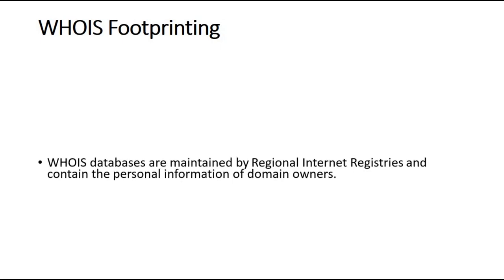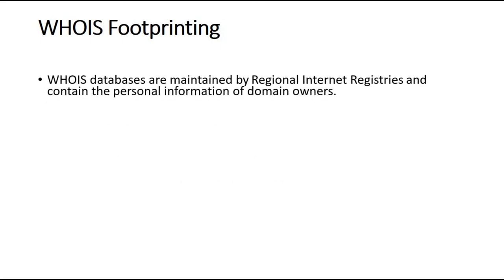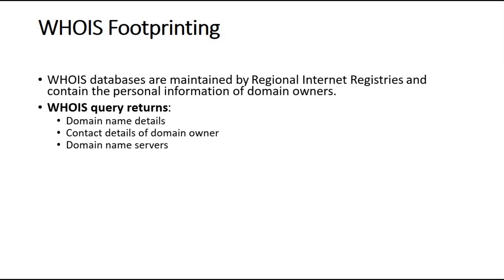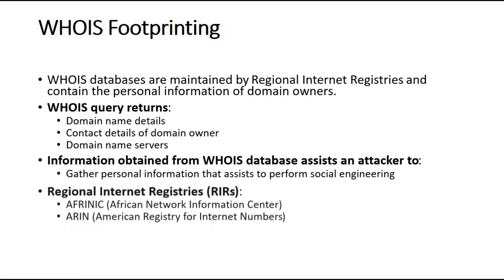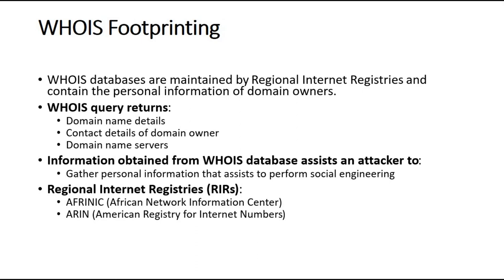WHOIS footprinting: WHOIS databases are maintained by regional internet registries and contain personal information of domain owners — including domain name details, contact details of the domain owner, and domain name servers. Information obtained from the WHOIS database assists attackers in gathering information to perform social engineering. You can check regional internet registries and analyze WHOIS lookup results.